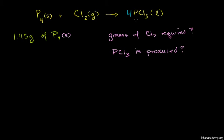Now I have four phosphorus atoms on both sides of the equation. Let's balance the chlorine. On the left-hand side, I only have two chlorine atoms — this one molecule of chlorine has two atoms in it. Here, each molecule of phosphorus trichloride has three chlorines, and I have four molecules of it. So 4 times 3, I have 12 chlorines on the right-hand side. I need 12 on the left, so I multiply by 6: 6 times 2 is 12, 4 times 3 is 12. Now our equation is all balanced — four phosphoruses on each side and 12 chlorines.